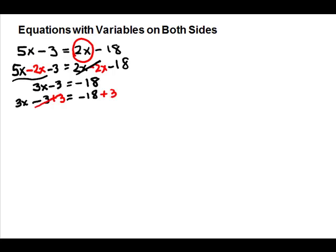Then we clean up. Watch your signs on this side — we have different signs, so subtract and take the sign of the larger. Then go back to the side with the variable. We need to divide out the coefficient, which is 3, on both sides, and that gives us x equals negative 5.